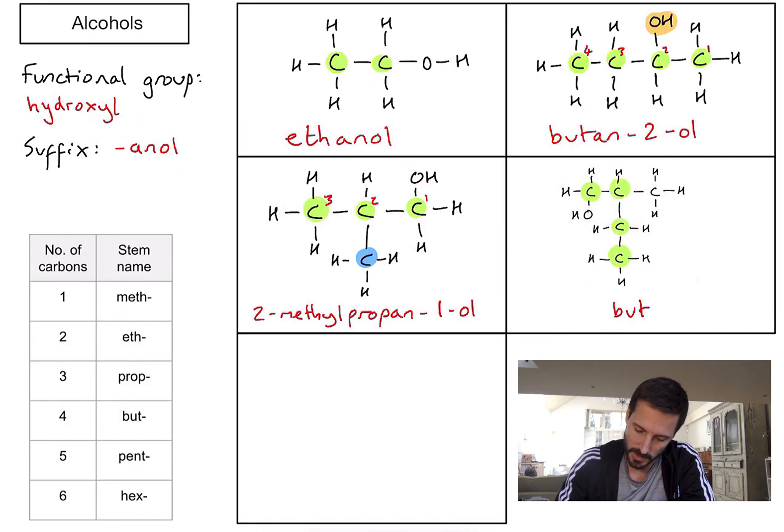Which carbon is it on? Well, if I label my carbons with that as number one, two, three, four, that's going to keep my OH group on carbon number one. If I did it the other way around it would be in carbon number four, but we always want to keep those numbers as small as possible. So I'm going to label it from left to right. So we've got butan-1-ol, and then what's the extra bit we need to make sure to include? Well, I've got again a methyl group sticking off my second carbon in the chain. So this is going to be 2-methylbutan-1-ol.